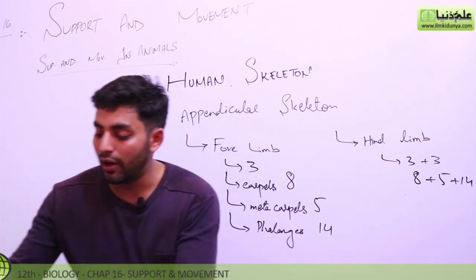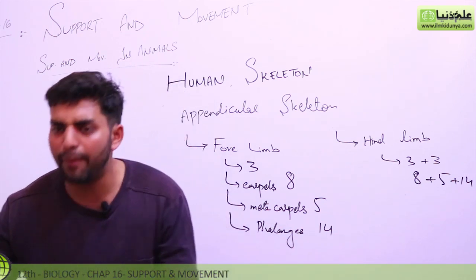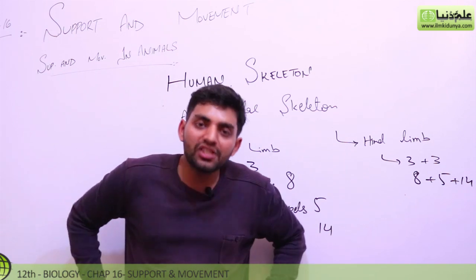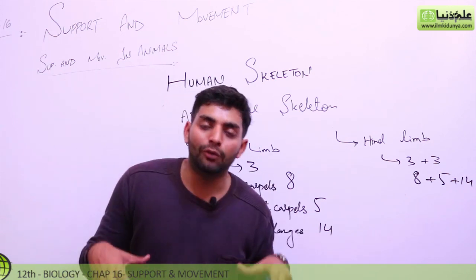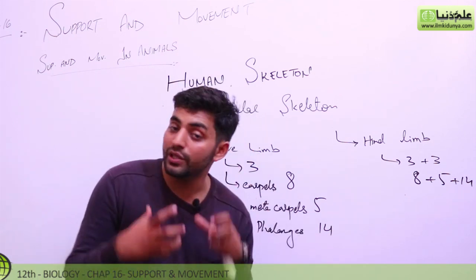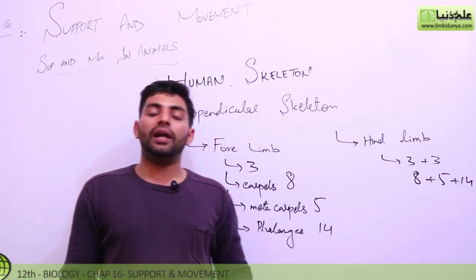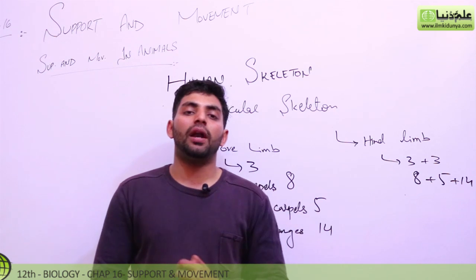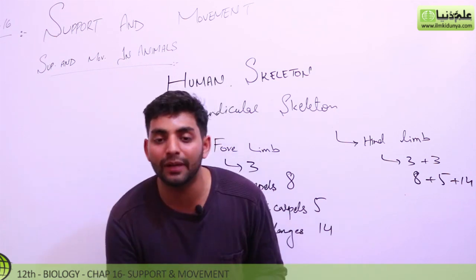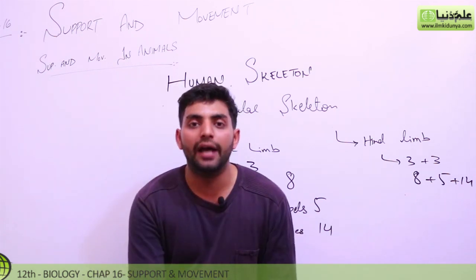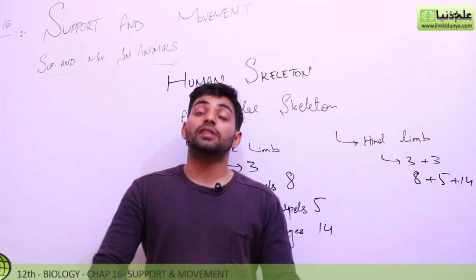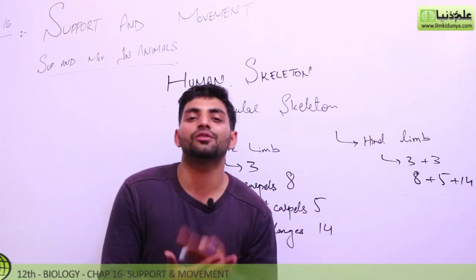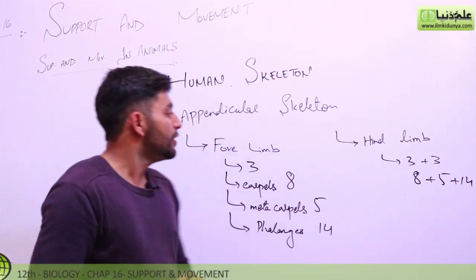Ultimately, in the pelvic region, we are talking about the hip — the ball and socket joint in the pelvic area. Then going down to the toes, we are talking about the tarsals, metatarsals, and phalanges.